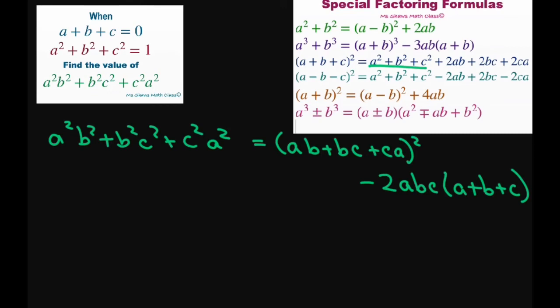Now that means this is going to equal, right here, this equals negative one half and then you square it. And then minus a plus b plus c is zero, so you're going to have two abc times zero. Therefore this just zeroes out. So our final answer is going to be one fourth.